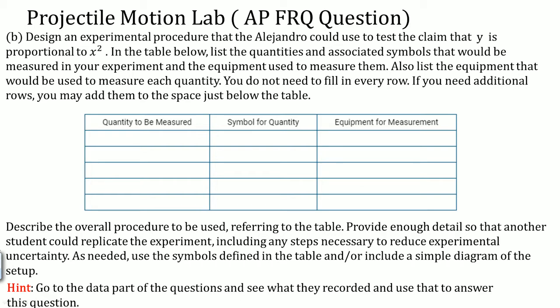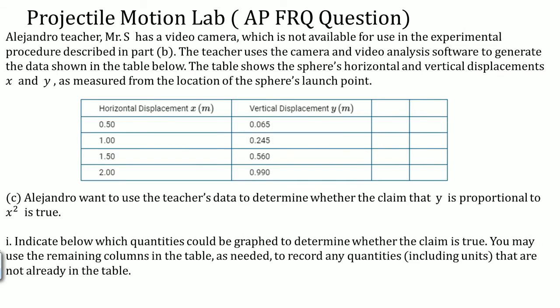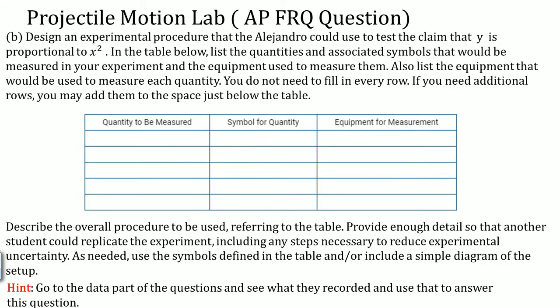The AP Physics 1 FRQ will always give you the data. They never ask you to compute the data yourself. If you look at part c, here it is. The chart was already filled out. What they recorded was the horizontal displacement and the vertical displacement. They give you the scenario explaining how that data came to be. This is the data they collected. So you come back to the earlier question and now fill it out.